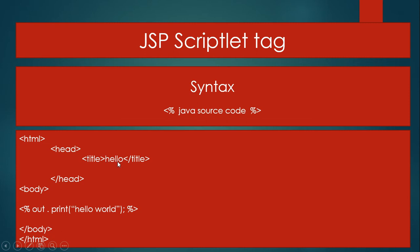I write the HTML head, and within the head I write the title, then close the title and close the head. Body opens here, and within the body I am using the scriptlet tag — the opening angle bracket and then percentage. This is the out implicit object of JSP. With the help of the out object we call the print method, and within the print method I simply write the message 'Hello World'. This message Hello World prints onto the screen with the help of the scriptlet tag.